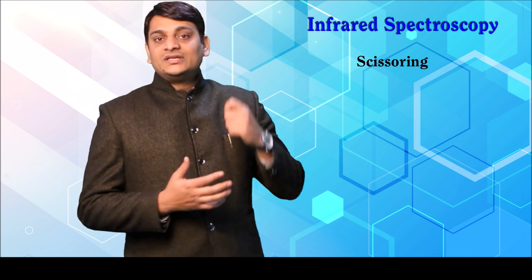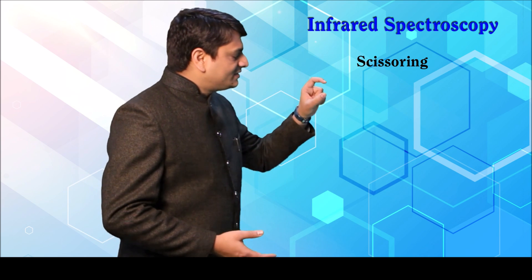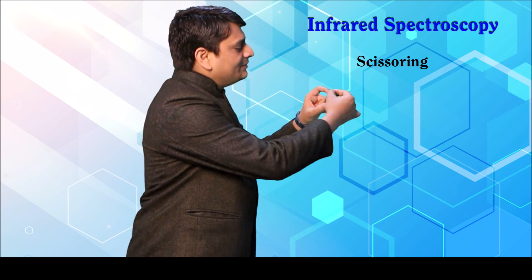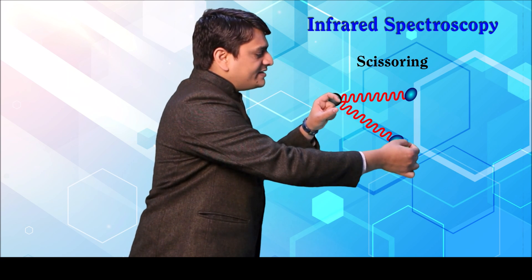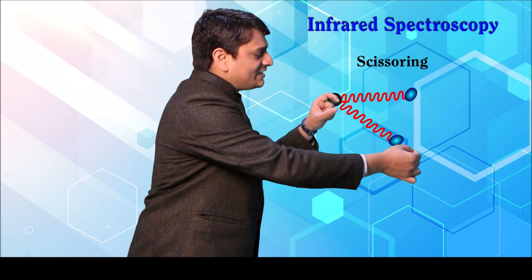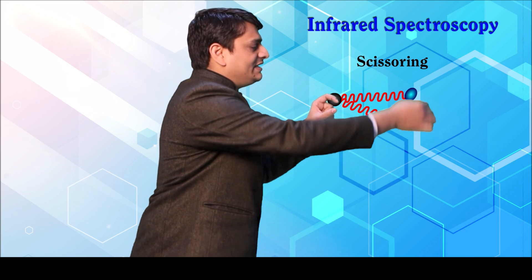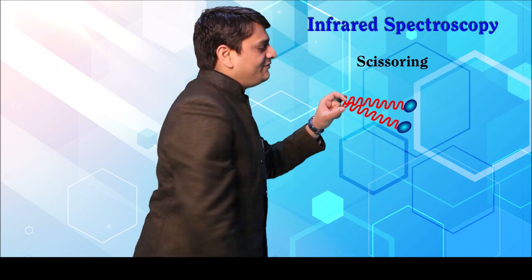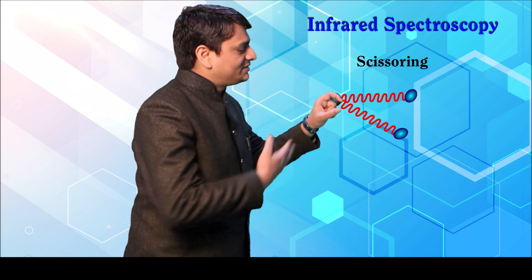In scissoring, the atoms of the compound are present with bonds connected to them. The movement of these bonds is like a scissor — one bond comes in from one side and the other bond comes from the other side, showing a scissoring movement.